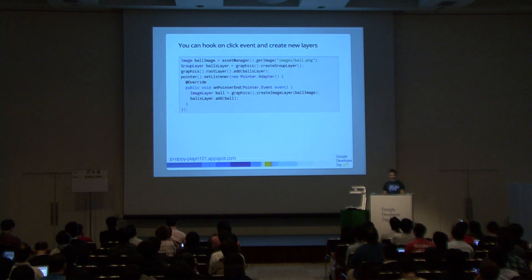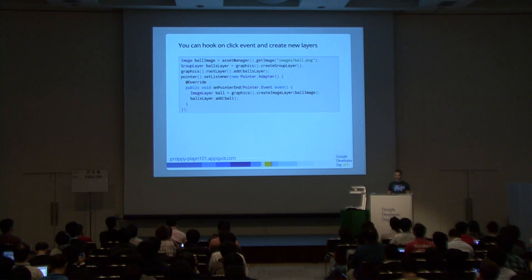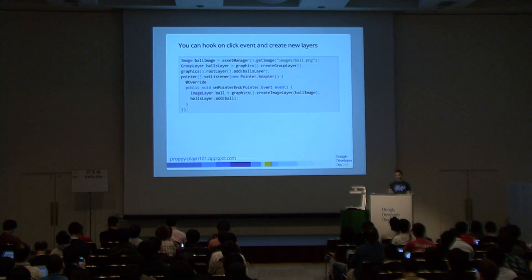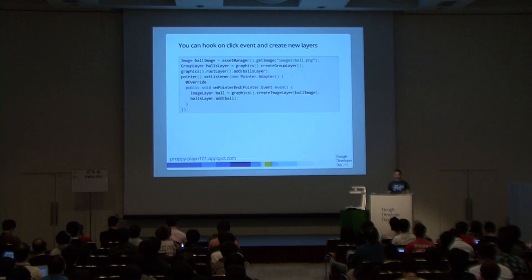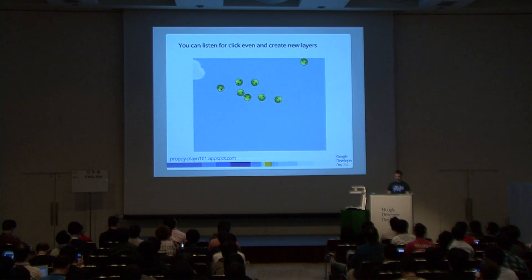This looks more like a screensaver than a game, so we add some balls. Like with the cloud, we load the image from the asset manager, create a group layer to hold all ball objects, and add it to the root layer. We get the pointer system and listen for click events — overriding onPointerEnd, which is called each time we click on the screen. When we click, we create an image layer based on the loaded ball image and add it to the ball layer.